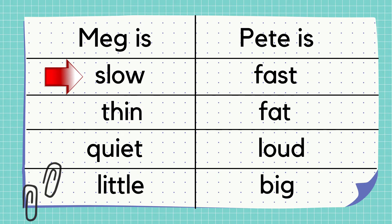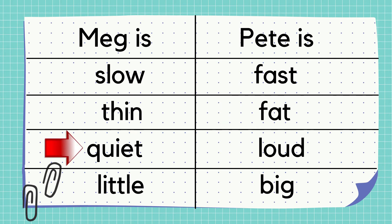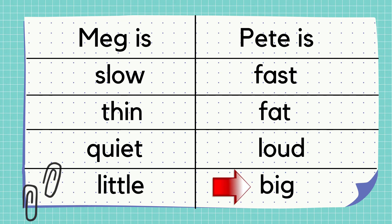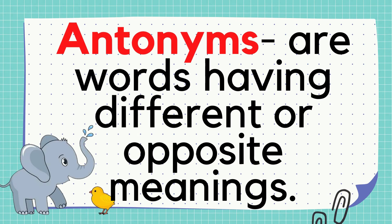For example: Meg is slow while Pete is fast. Meg is thin while Pete is fat. Meg is quiet while Pete is loud. Meg is little while Pete is big. These words with opposite meanings are what we call antonyms. What is antonyms? Antonyms are words having different or opposite meanings.